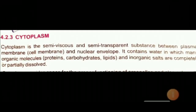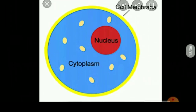Our next topic is cytoplasm on page number 59. Cytoplasm is a semi-viscous, semi-transparent substance present between the cell membrane and the outer covering of the nucleus. It contains water in which proteins, carbohydrates, lipids, and inorganic salts are present. The function of the cytoplasm is to give space to the organelles for their proper working and to act as a site for many biochemical reactions like glycolysis.